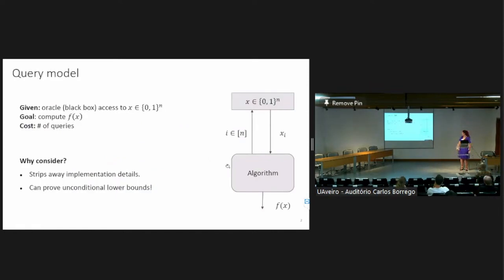The first model that I'm going to start with is introducing the query model. In the query model, we have an algorithm that has Oracle black box access to unknown input string X, and the goal of the algorithm is to output a known function F of X while minimizing the number of queries it makes to the Oracle. By query, I just mean read one bit from the input.